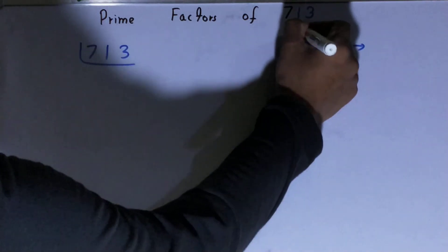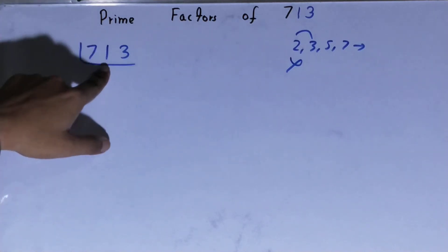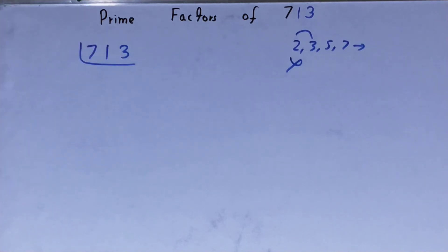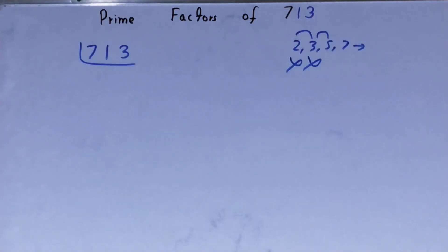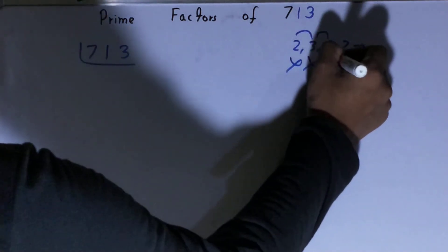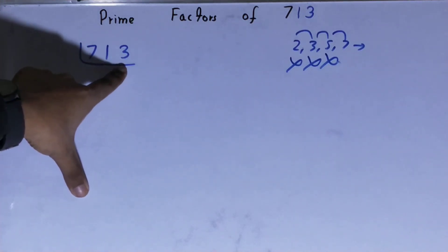So what we'll do, we'll go to the next lowest prime number we have, that is 3. Is the number 713 divisible by 3? Let's check: 3, 2, 6, 1, 1, 3, 3 is 9, 2, 3. No, it is not divisible by 3. Let's check it with 5. The last digit is neither 5 nor 0, so it is also not divisible by 5. Let's check it with 7. No, it is not divisible by 7 also.